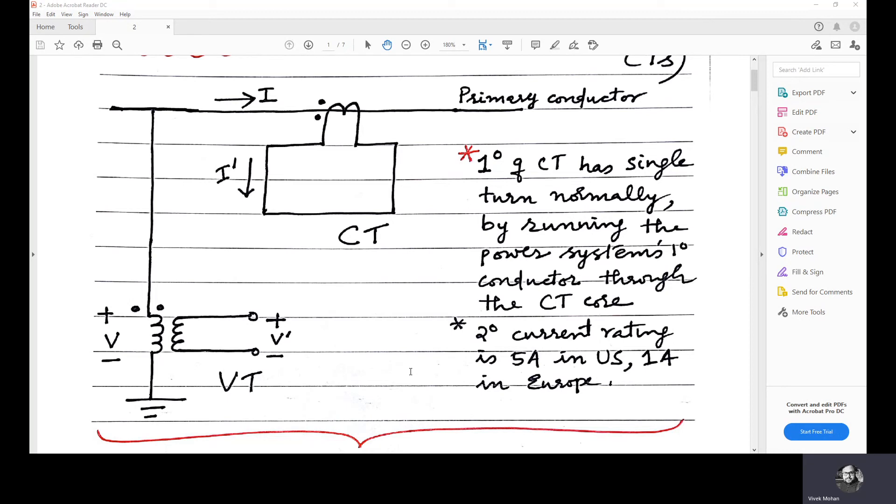Basically, two types are there for CT, the wound and the closed core. And in PTs, we have two types, electromagnetic and capacitor voltage. We will see the classification of VTs and CTs based on its construction in the coming lectures.